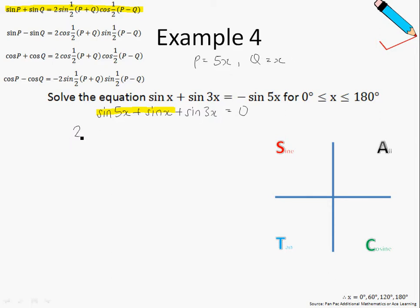So breaking this down, I'll have 2 sine 5x plus x divided by 2, so half of 5x plus x, cosine half of 5x minus x, plus sine of 3x equals 0. Breaking this down even further, I will have 2 sine 3x cosine 2x plus sine of 3x equals 0.